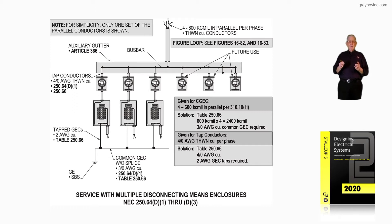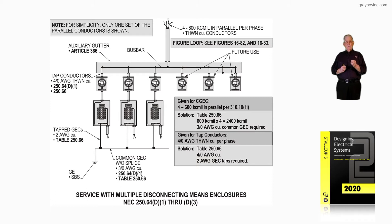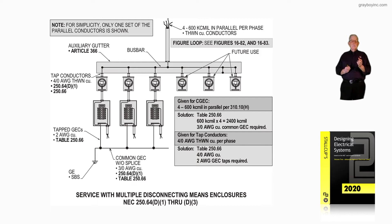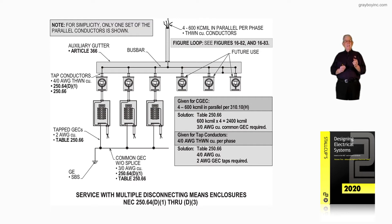The 3 AWG requirement is found when you read through 250.64(D1) through (D3). So the common grounding electrode conductor, as shown in callout, is 3 AWG copper per 250.64(D1) and table 250.66. For the tap conductors, if they were 4 AWG conductors feeding that main, the grounded conductor for an effective ground fault path would be a number 2 per table 250.102(C1). The grounding electrode conductor would also be number 2 per table 250.66, based on those 4 AWG conductors tapped from the auxiliary gutter to the main and the panelboard.